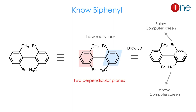Let us understand the biphenyl first. Biphenyl is a compound where two benzene rings are attached through a single bond and you have ortho substitutions. How they really look is they are in eventually perpendicular planes — one benzene and another benzene perpendicular to each other. We can draw this on paper through wedge and dot structure: one benzene is on the plane, another benzene has half above the plane and half below. The bromine is below the plane, C3 is above the plane. You have to imagine a molecule in 3D to master the R and S configuration.